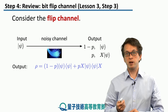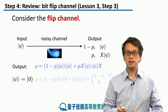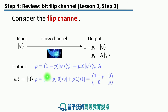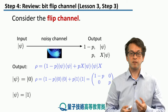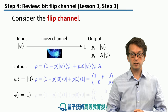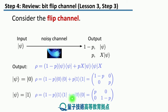For example, if our input state is |0⟩, then substituting into the expression gives a density matrix with only two diagonal terms: with probability 1 minus p it's in |0⟩ and with probability p it's in |1⟩. On the other hand, if our input state is |1⟩, then with probability 1 minus p we get |1⟩ and with probability p we flip it back to |0⟩. So again it's a diagonal matrix but this time the probabilities are flipped.